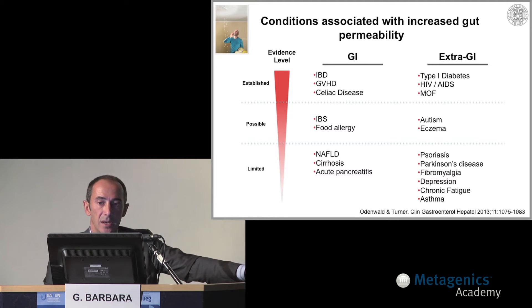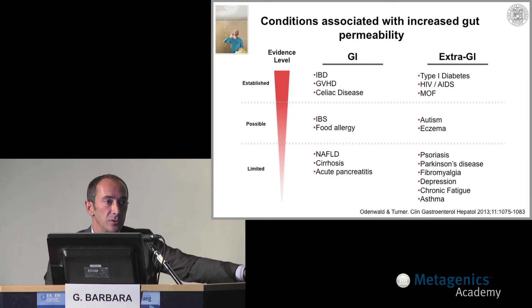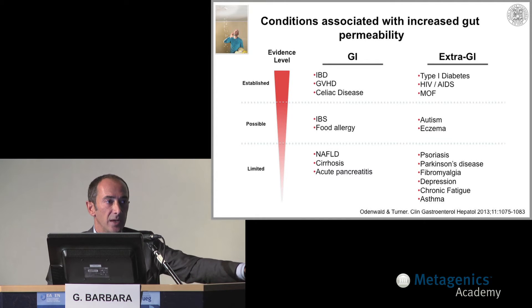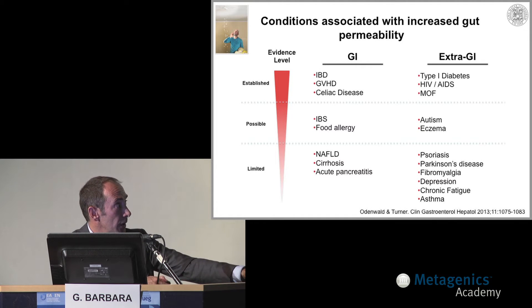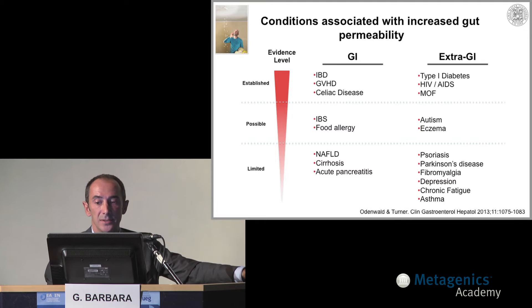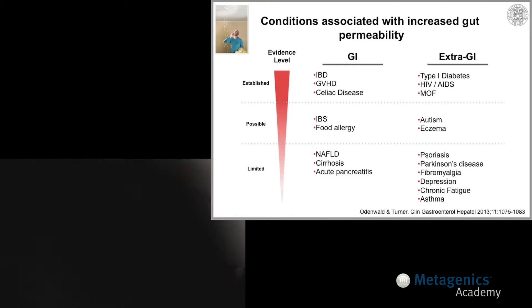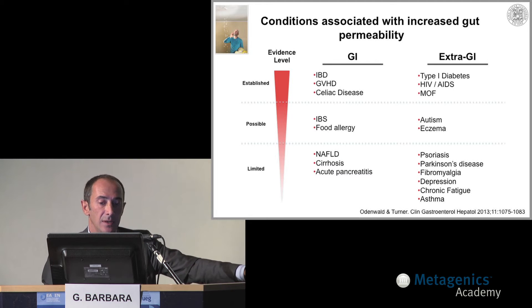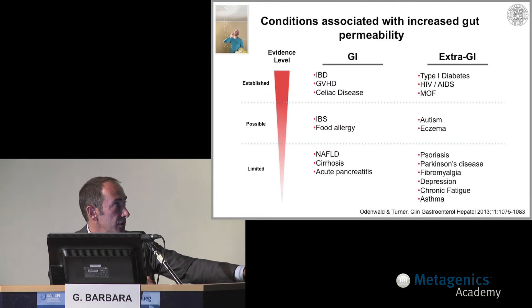This is a list of conditions associated with an increased gut permeability. These can be both GI and extra-GI disorders. For some of these conditions, the association between the leaky gut and these pathologies is very well established and there is a clear pathogenetic role of the leaky gut — including, for example, IBD, and in systemic conditions, type 1 diabetes, HIV infection, and multi-organ failure. For other conditions, this link is less evident, such as irritable bowel syndrome or food allergy.